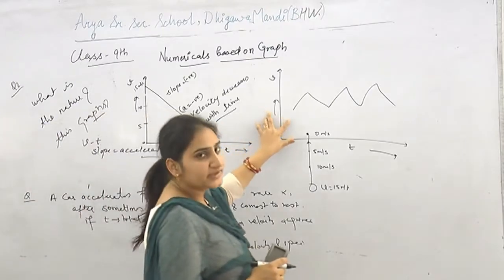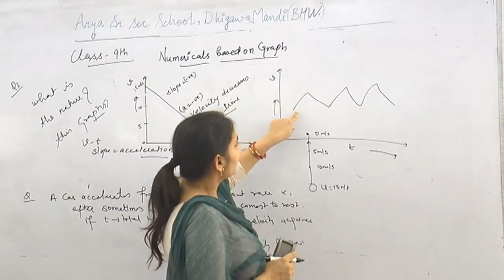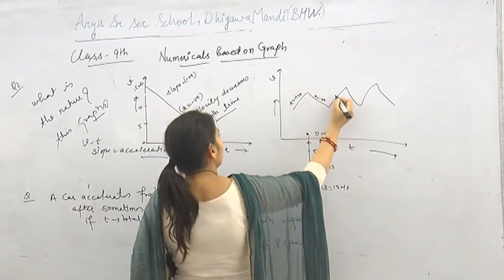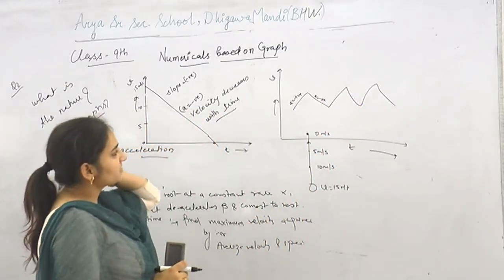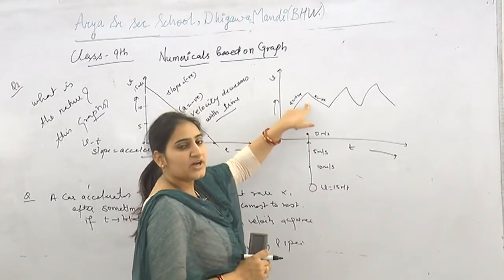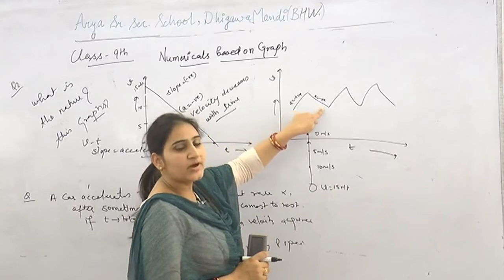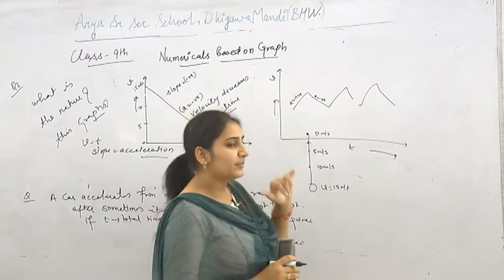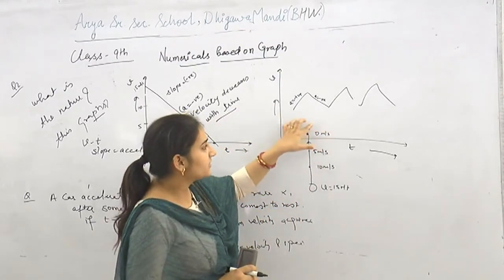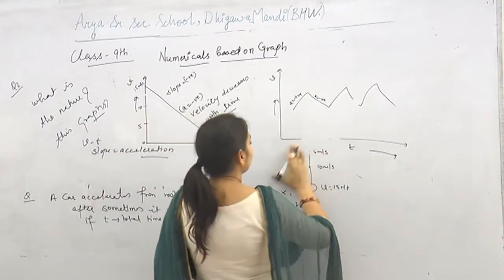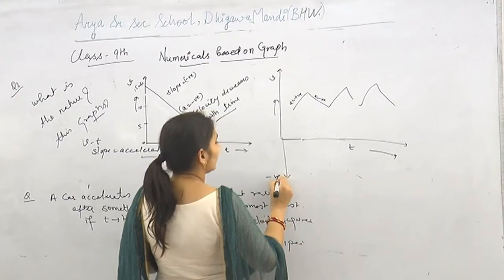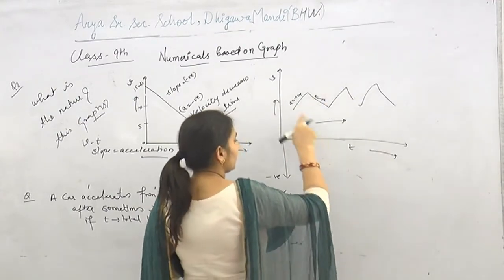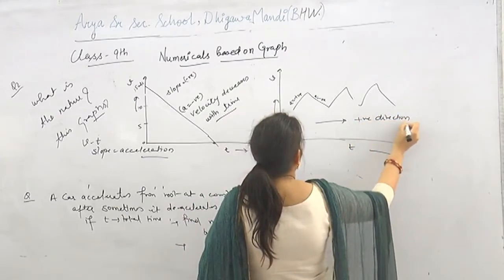Looking at the second graph: first the acceleration is positive, then negative. During the positive slope, velocity is increasing; during the negative slope, velocity is decreasing. The velocity stays in the positive direction only — it doesn't go negative. This represents a bus or truck driver going in one direction: sometimes accelerating on a smooth road, sometimes slowing down at a speed breaker, but always in the same direction.